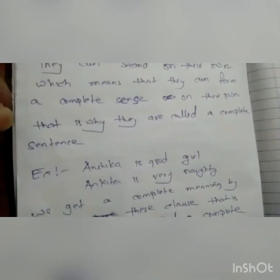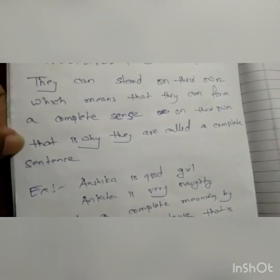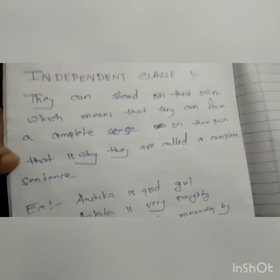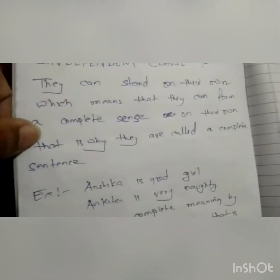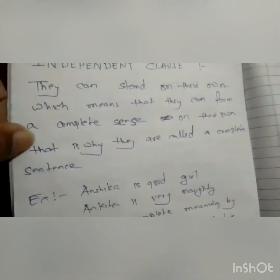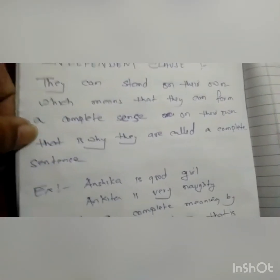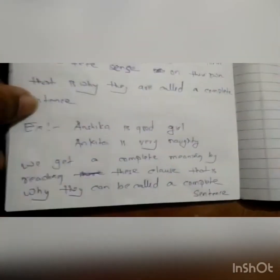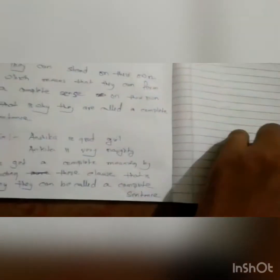Example: 'Anshika is a good girl' and 'Ankita is very naughty.' In these two examples, Anshika and Ankita are the subjects, and 'is a good girl' and 'is very naughty' are the predicates. After reading these two clauses we get a complete sense — we can understand what is being told. That is why independent clauses are known as complete sentences. Now, the next type of clause is dependent.